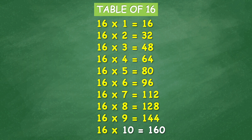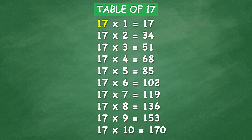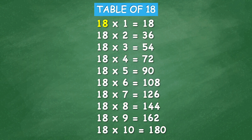16 times 10 equal 160. Table of 17: 17 times 1 equal 17, 17 times 2 equal 34, 17 times 3 equal 51, 17 times 4 equal 68, 17 times 5 equal 85, 17 times 6 equal 102, 17 times 7 equal 119, 17 times 8 equal 136, 17 times 9 equal 153, 17 times 10 equal 170.